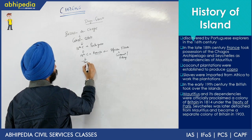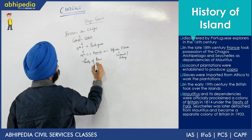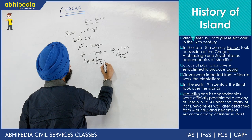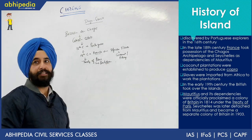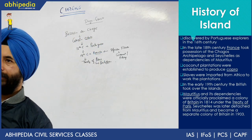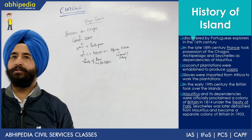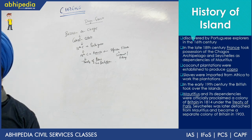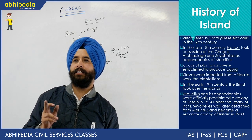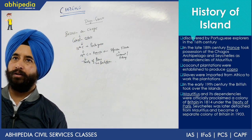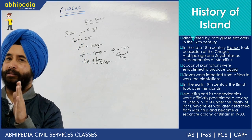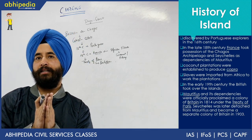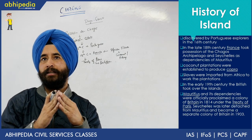Then the Treaty of Paris was signed, under which the island was given to the British. From around 1814, it came under the control of the British. The major islands in the Chagos Archipelago include the Seven Atolls and Diego Garcia — Diego Garcia being the most significant one.